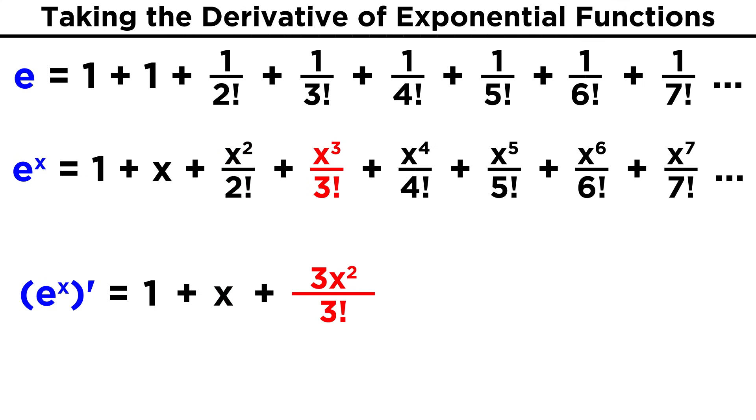The derivative of X cubed is three X squared, and three factorial is three times two times one, so the threes cancel and we get X squared over two times one, which is two factorial.